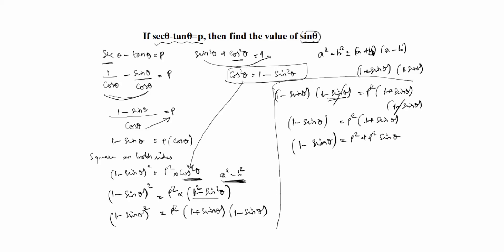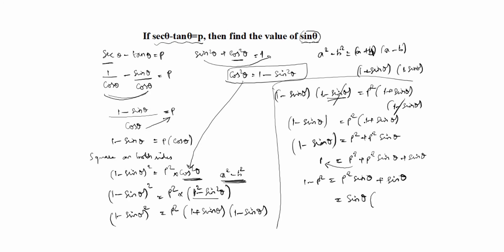Rearranging, we keep sine theta terms together: 1 minus p squared equals p squared sine theta plus sine theta. Taking sine theta as common: 1 minus p squared equals sine theta times p squared plus 1. So sine theta equals 1 minus p squared divided by p squared plus 1. This is the answer.